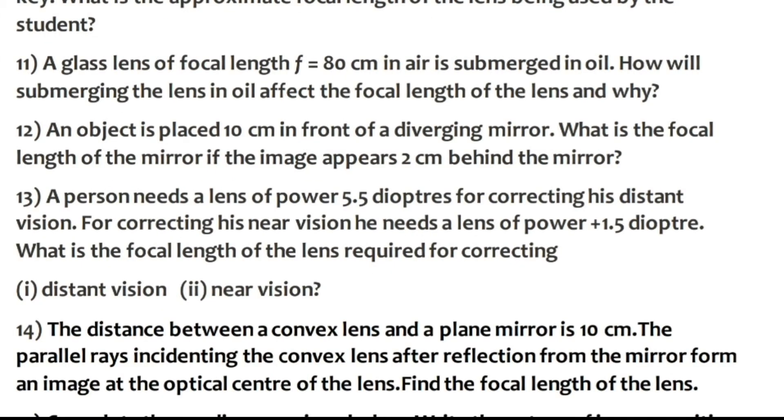Question 14: The distance between a convex lens and a plane mirror is 10 cm. The parallel rays incident on the convex lens after reflecting from the mirror form an image at the optical center of the lens. Find the focal length of the lens.